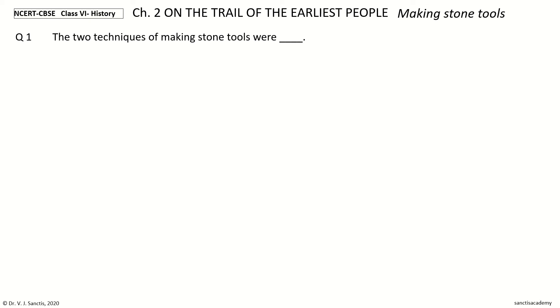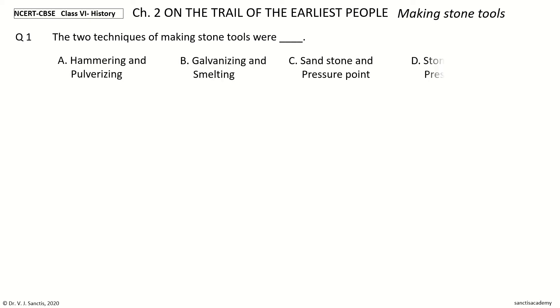Question 1: The two techniques of making stone tools were dash. The options are: hammering and pulverizing, galvanizing and smelting, sandstone and pressure point, stone on stone and pressure flaking.